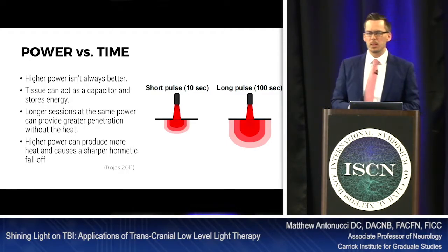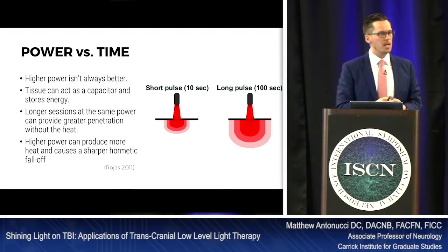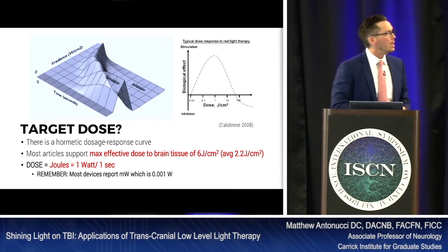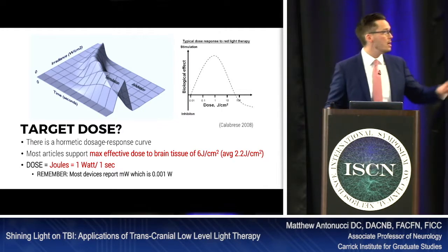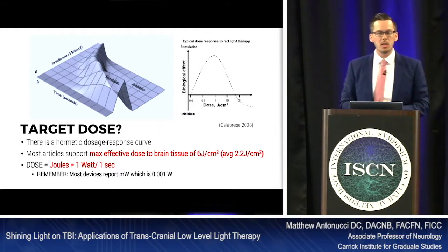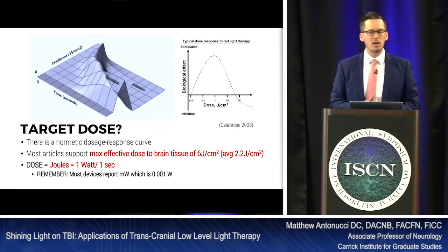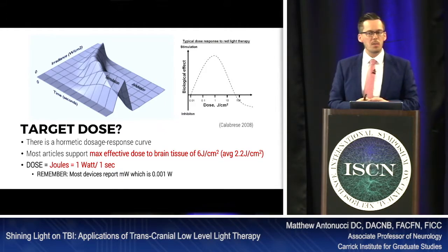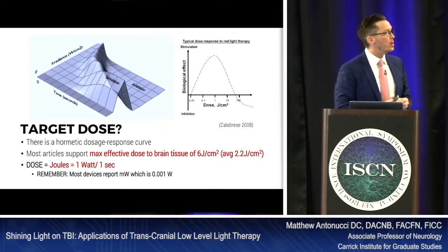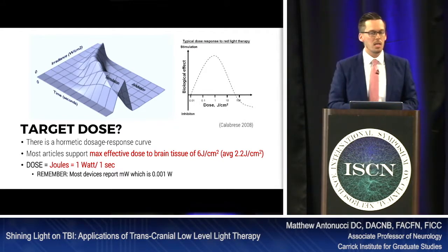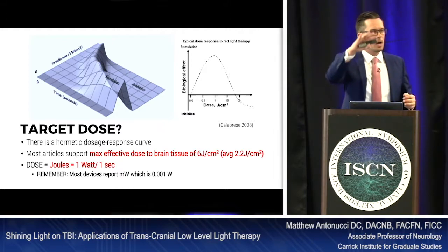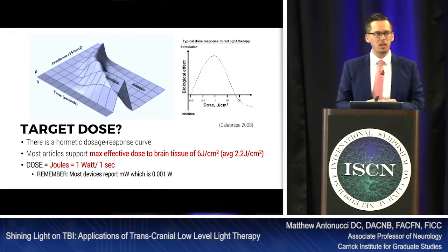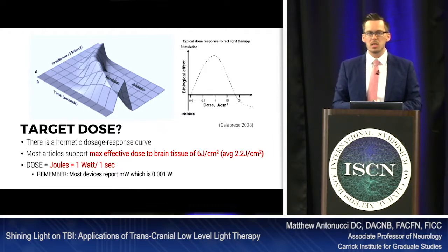Higher power can produce more heat and causes a sharper hormetic curve — everyone's familiar with hormesis. X-rays have a hormetic curve: some is beneficial, some is detrimental. Light has the same curve. In this 3D rendering of the hormetic curve, as power increases up the y-axis the shape looks like a mountain — there's a sharp drop-off with higher power, but a plateau at the top with lower power, meaning lower power is more forgiving when dose calculations aren't exact.